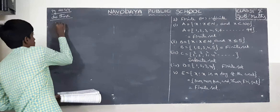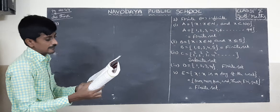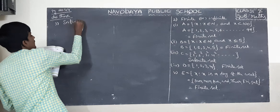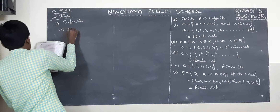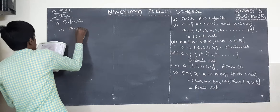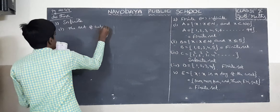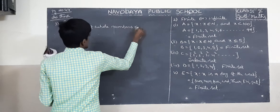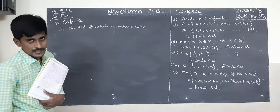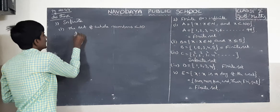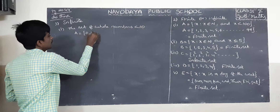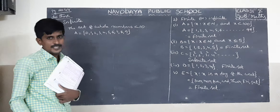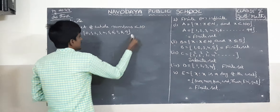Third round: identify which of the sets is infinite. First one: the set of whole numbers less than 10. Whole numbers start from zero, so A equals 0, 1, 2, 3, 4, 5, 6, 7, 8, 9 only. This is a finite set.